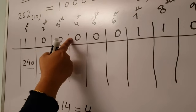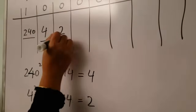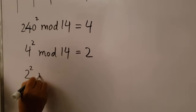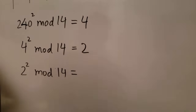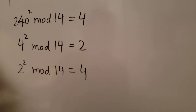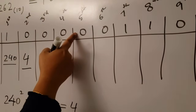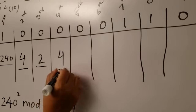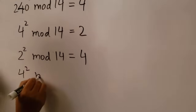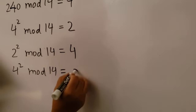Look at the binary digit of the fourth column, which is zero again. Take two, square it, and modulo 14, which equals four. Write four in the fourth column. Now look at the binary digit of the fifth column, which is again zero. Take four, square it, modulo 14, which equals two. Write two in the fifth column.